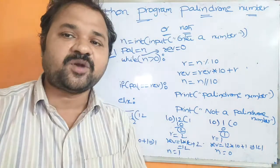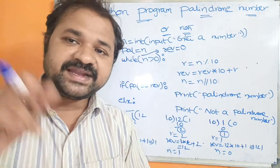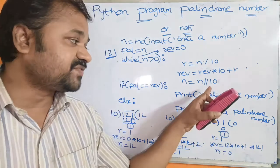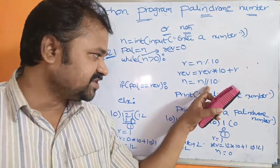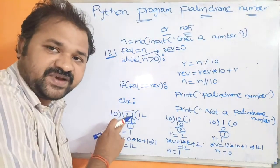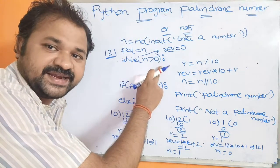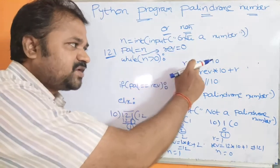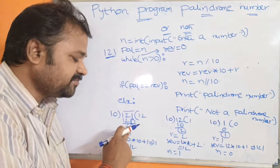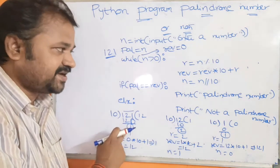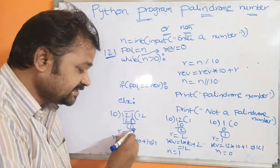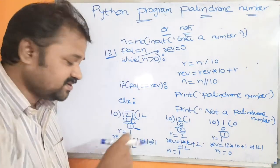We should not use the regular division operator here because in Python division returns a floating point number, but we require the integer part. That's why we use the integer division or floor division operator. Now let's trace the logic with n = 121. Since 121 > 0, the condition is true. r = 121 % 10. 10 times 12 is 120, and 121 minus 120 is 1. The modulo operator always gives the remainder, so r = 1.